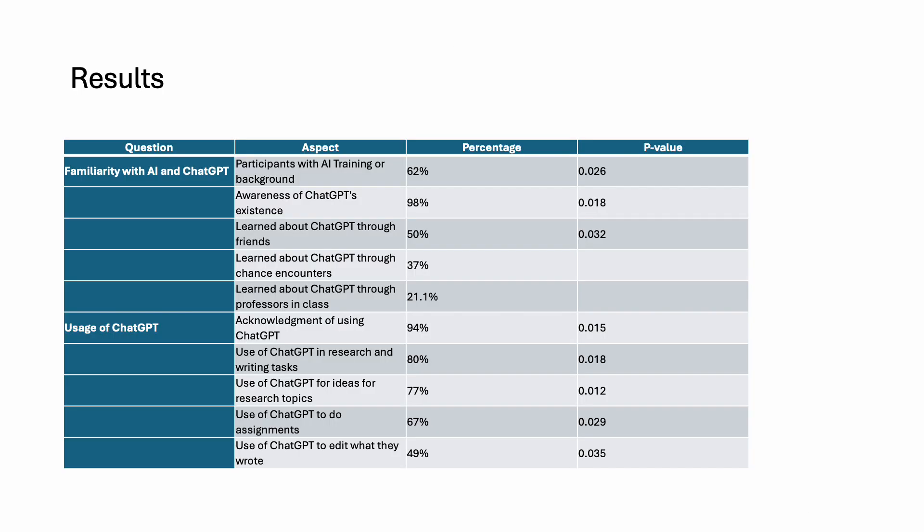A significant aspect of the study involved investigating students' familiarity with ChatGPT. As you can see from the table, 62% of respondents had AI training or background, showcasing a substantial level of technical exposure. Additionally, 98% of the students were aware of ChatGPT's existence, indicating a high degree of awareness within the student community. Among those aware, more than 50% learned about it through friends, followed by chance encounters at 37%, and last, from professors in class. This suggests a considerable influence of social circles in disseminating information about ChatGPT.